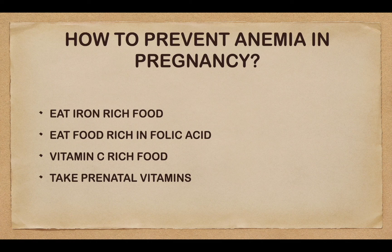To prevent anemia in pregnancy, eat iron-rich food like chicken, green peas, sprouts, broccoli, dried apricots, strawberry, raspberry, kidney beans, oats, raisins, spinach, liver, and tofu. Eat food rich in folic acid like dried beans, green leafy vegetables, wheat, and orange juice. Vitamin C rich food like lime and orange juice should be advised, and take prenatal vitamins correctly.